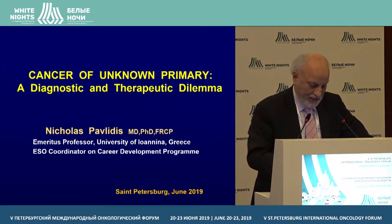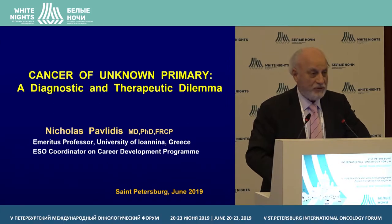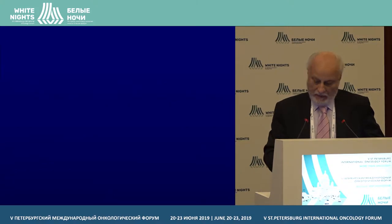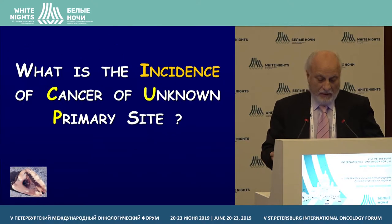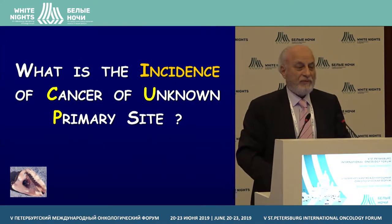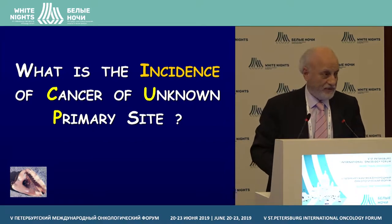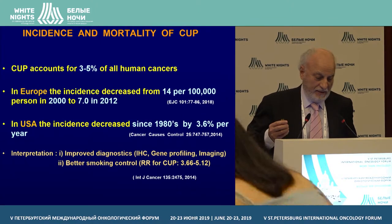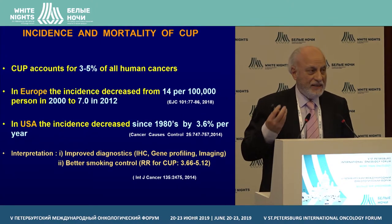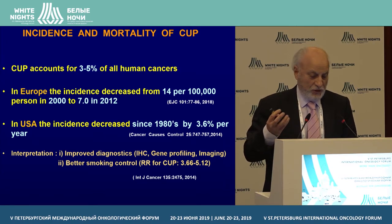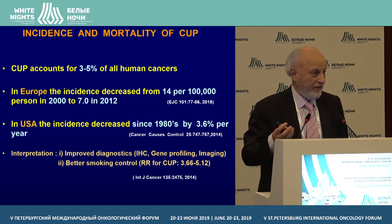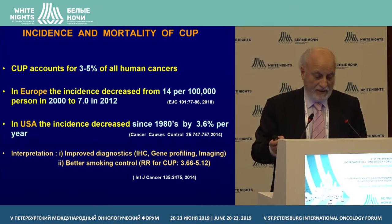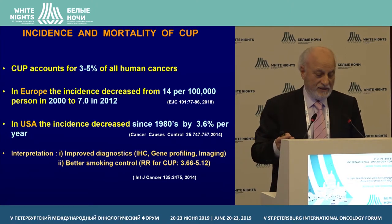What I'm going to do in the next 30 minutes is cover the whole spectrum of cancer of unknown primary. Let's start with the first question: what is the incidence of cancer of unknown primary? The answer is that up to now, the incidence used to be between 3% and 5%. But recently, both in Europe and in the United States, there is a decline in the incidence of CAP.